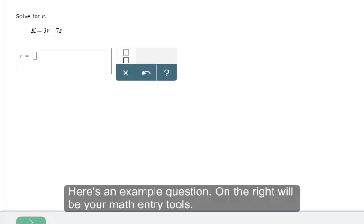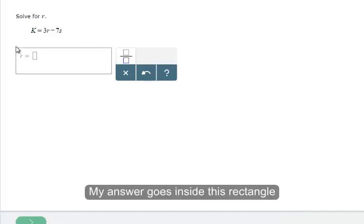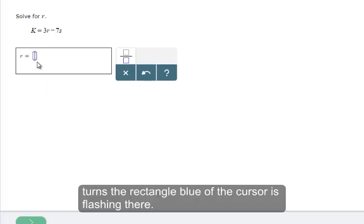Here's an example question. On the right will be your math entry tools. This question only has one tool. It has a clear all tool, a go back one step, and a how do I use the tools question mark. My answer goes inside this rectangle. To start entering my answer, I need to click in this little rectangle. It turns the rectangle blue and the cursor is flashing there.